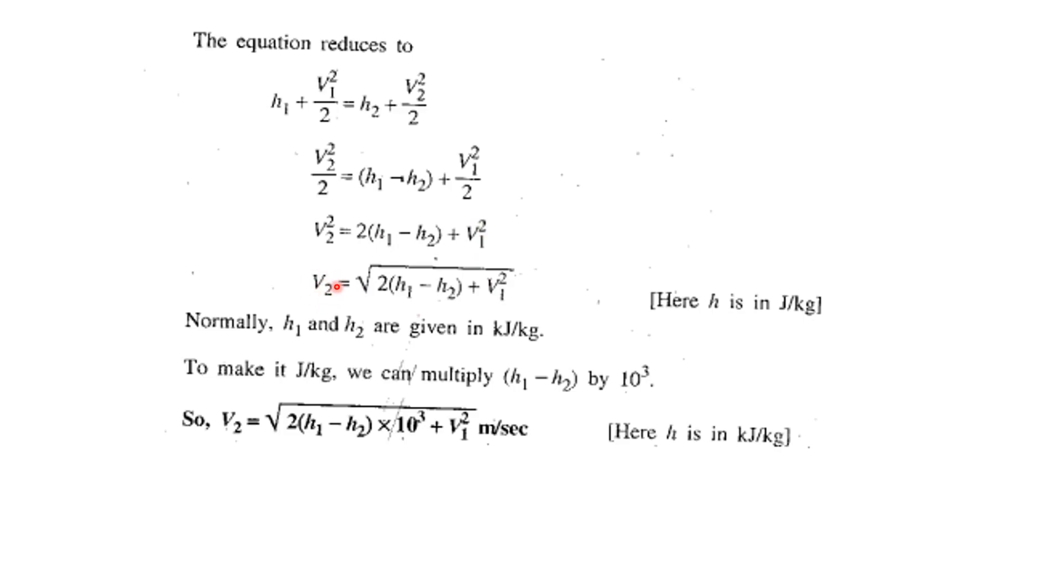Normally h₁ and h₂ are given in kilojoule per kilogram that we need to convert to joule per kilogram, so we multiply it by 10³ to get the velocity term.